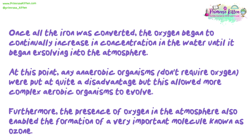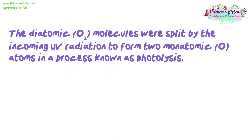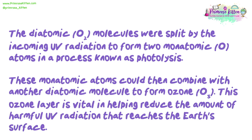Furthermore, the presence of oxygen in the atmosphere also enabled the formation of a very important molecule known as ozone. The diatomic molecules were split by incoming UV radiation to form two monatomic atoms in a process known as photolysis. These monatomic atoms could then combine with another diatomic molecule to form ozone. This ozone layer is vital in helping reduce the amount of harmful UV radiation that reaches the Earth's surface.